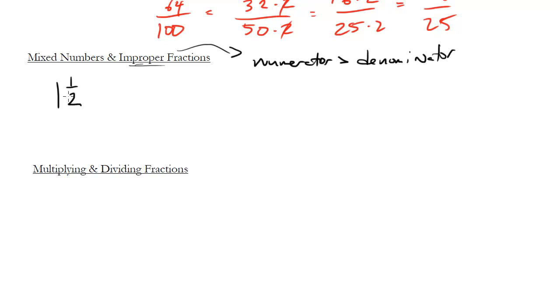So how can we write this as an improper fraction? Remember the technique to do this was you take the denominator, multiply it by this guy and then add it to 1. So what do we get for this guy? Well it's going to be 2 times 1 is 1, we add it to the numerator is 3 so we get 3 halves.